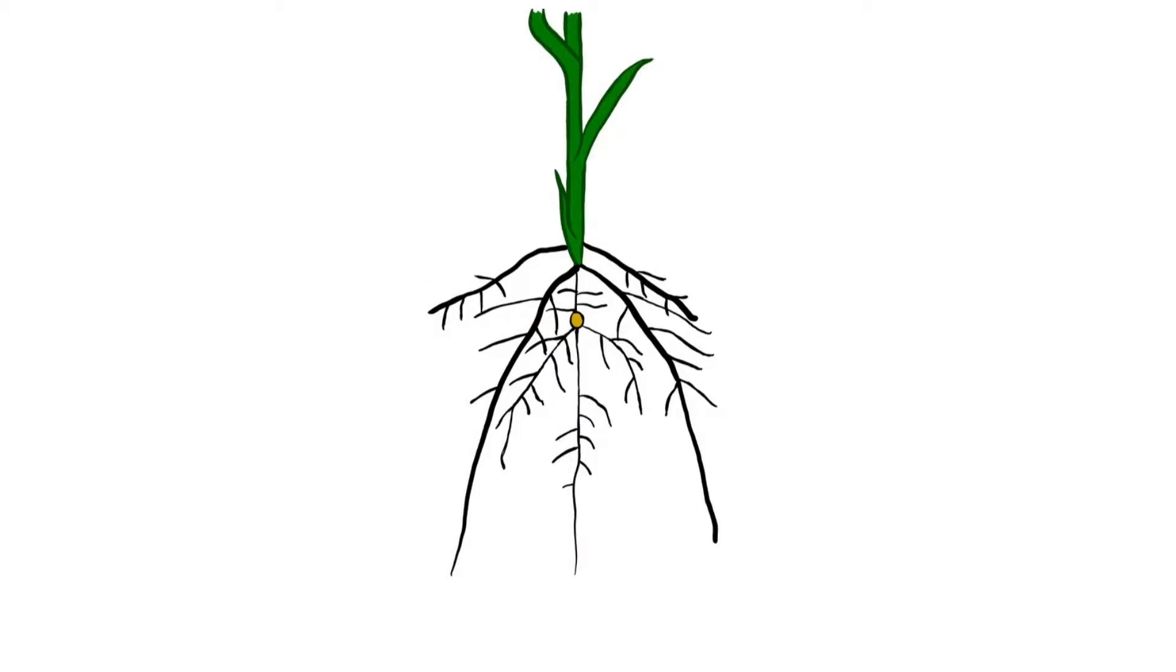Like seminal roots, nodal roots initiate after germination, but they emerge after some plant development. They are associated with tiller development and usually grow out when the fourth leaf emerges until it starts. Nodal roots are thicker than seminal roots and grow horizontally.